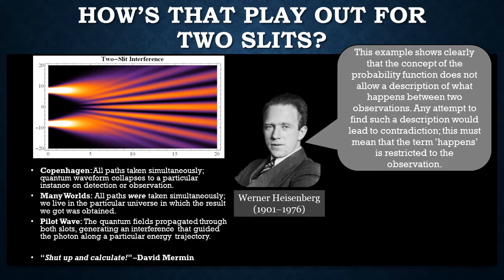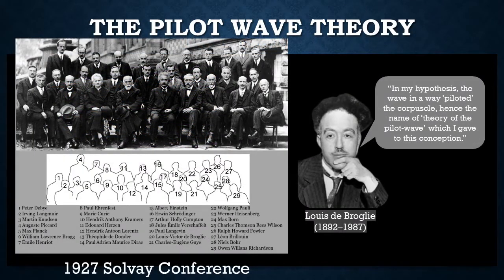Louis de Broglie came up with the pilot wave concept, presenting it at the 1927 Solvay conference, arguing the corpuscle is piloted by the waves. The problem was that mathematician John von Neumann quickly proved the theory was logically untenable with an elaborate mathematical proof. The prevailing founding fathers — particularly Heisenberg and Bohr — who liked the probabilistic statistical approach, were dismissive, and the pilot wave theory vanished for a time.